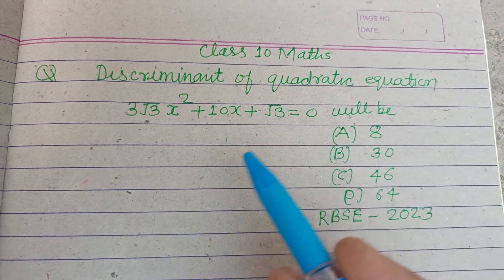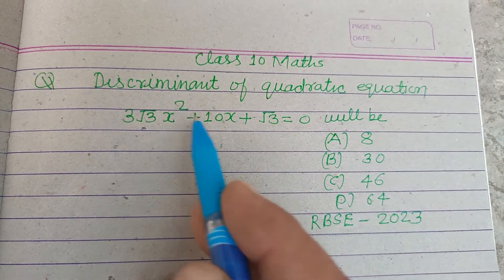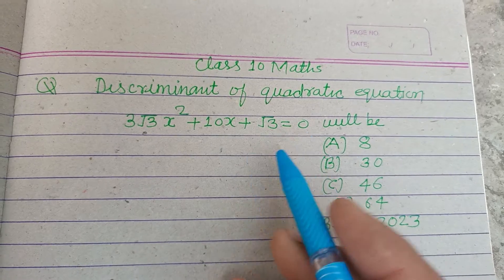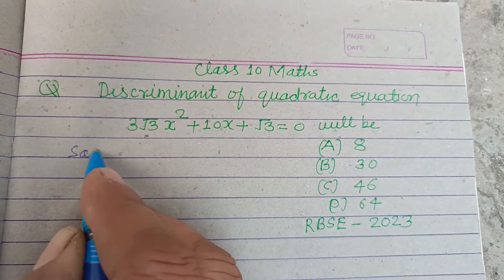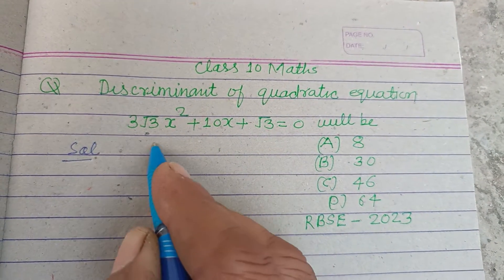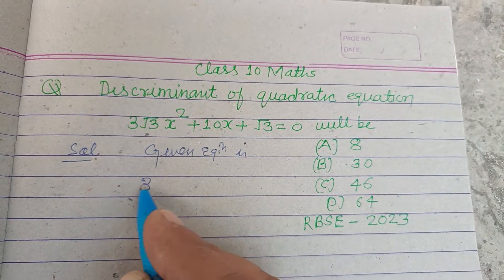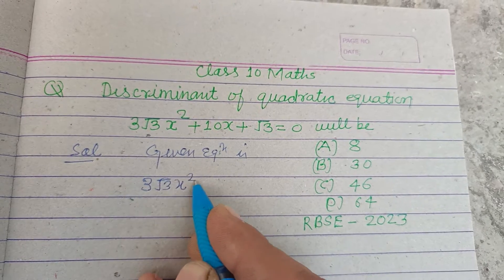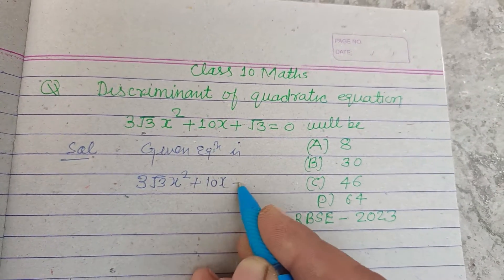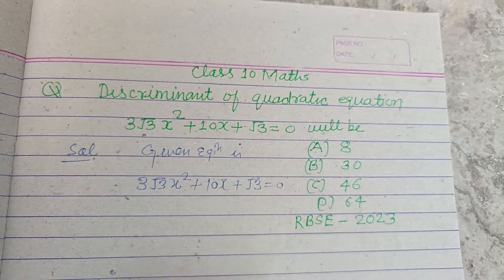Discriminant of the quadratic equation is 3√3x² + 10x + √3 = 0. So students, here the given equation is 3√3x² + 10x + √3 = 0.